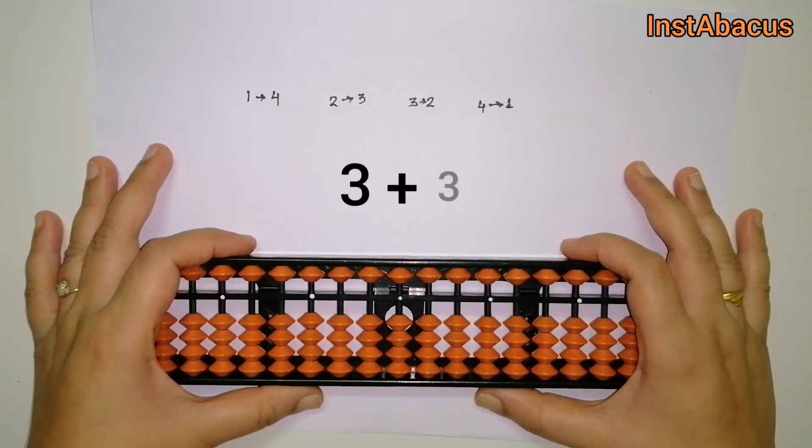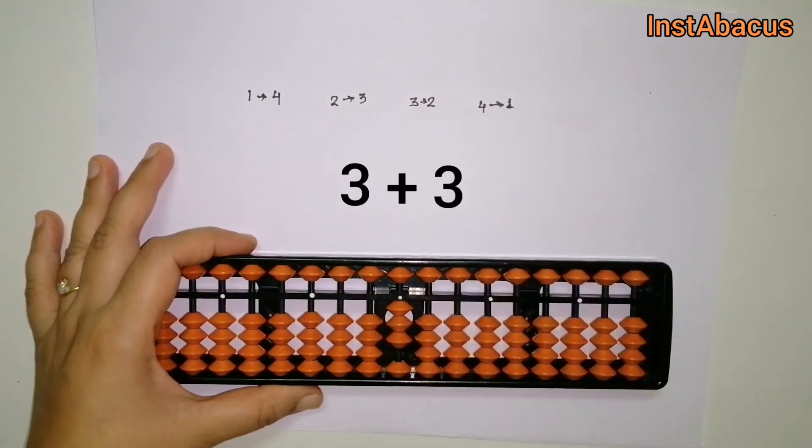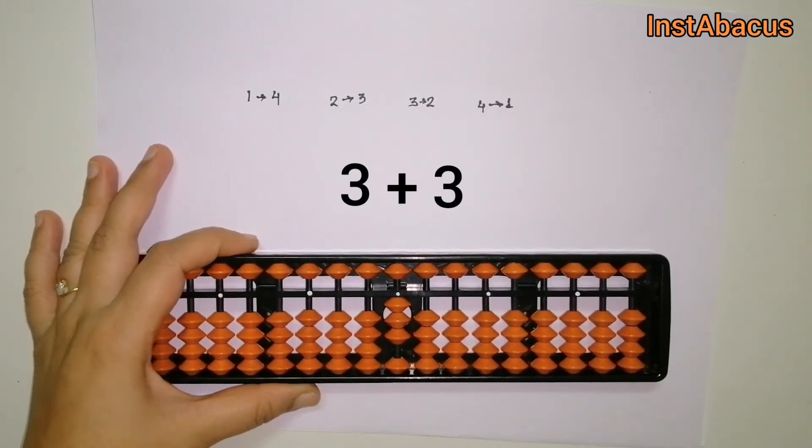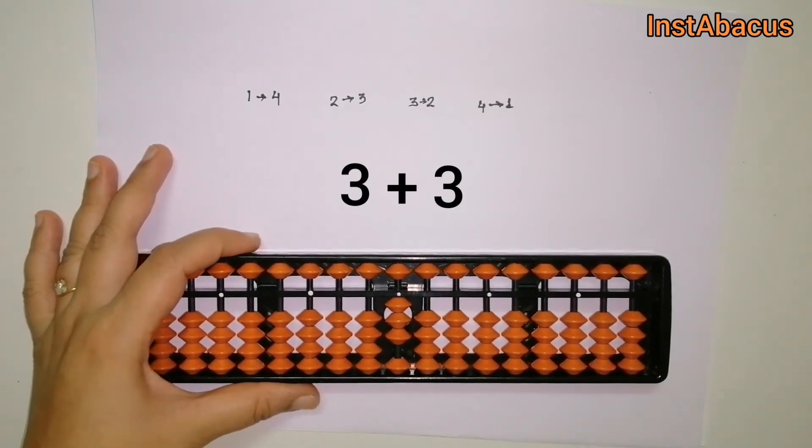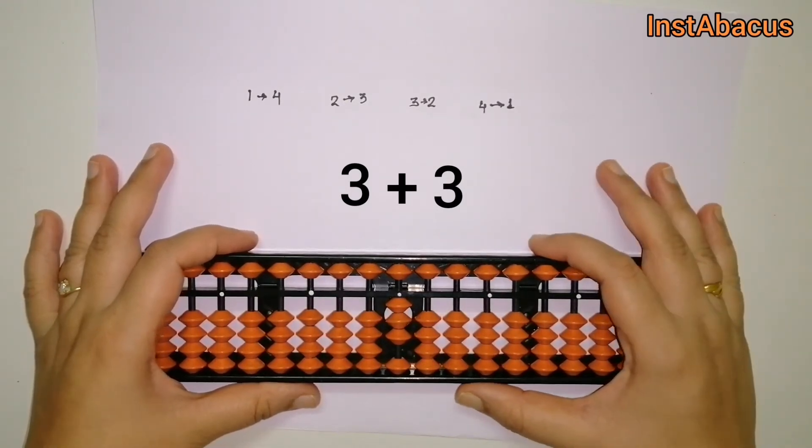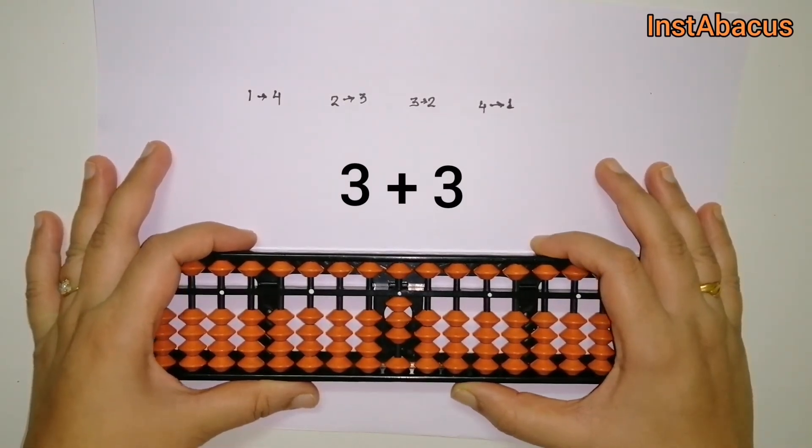Next, 3 plus 3. So this is 3 on our abacus, and now we have to add 3 to it. But again, we don't have enough earthly bits, right? So we have to do something else. What shall we do? Let's ask for help from our small friend.